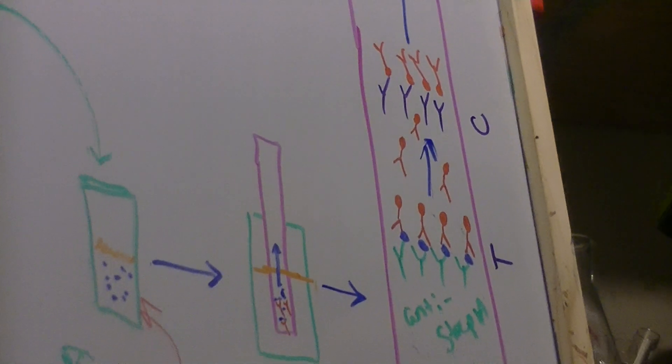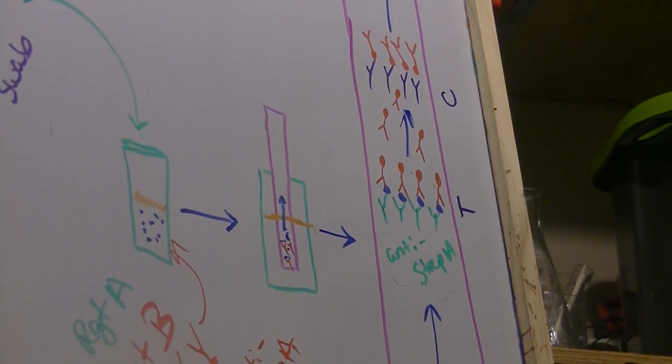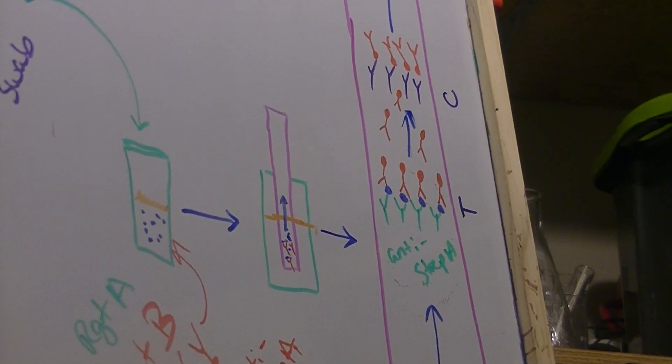This is why you have to see a control line, because you have to know that the sample made it all the way through the testing system.